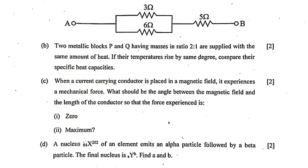Question 4d: A nucleus X (mass number 202, atomic number 84) emits an alpha particle followed by a beta particle. The final nucleus is Y(b, a). Find a and b. After alpha decay: mass number becomes 198, atomic number becomes 82. After beta decay: atomic number increases by 1 to 83. So the answer is Y(198, 83): a = 83, b = 198.